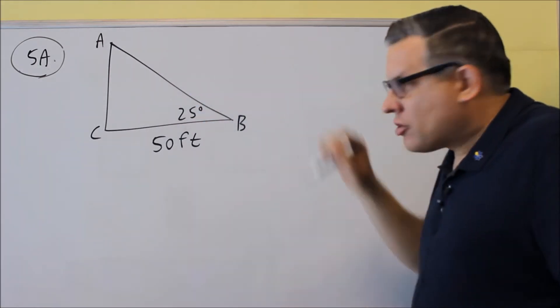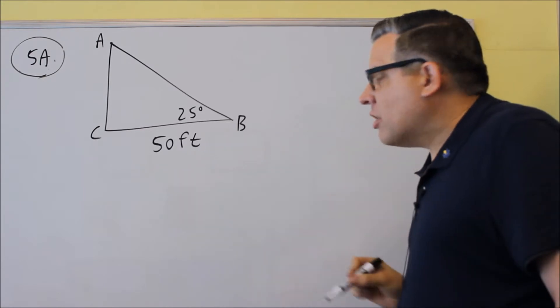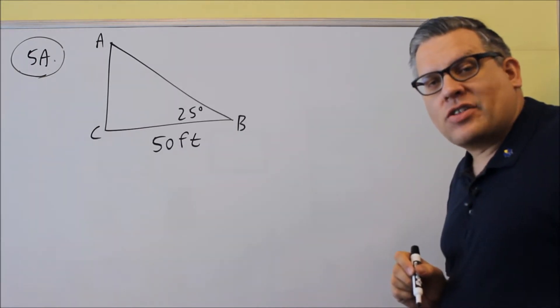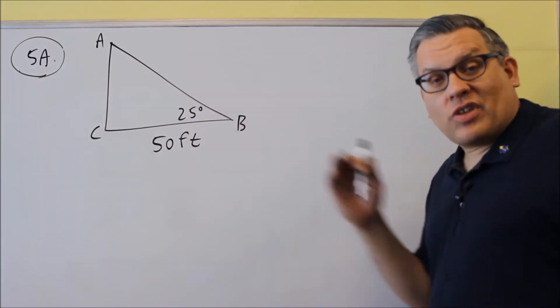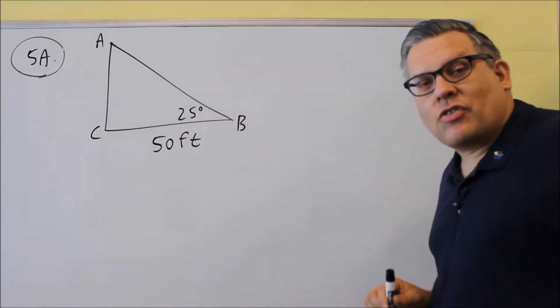Now you're given an angle here, 25 degrees, and 50 feet here. What you want to do is find the trig function that relates the side you're trying to find, which is side AC, with the side that is given, and that's going to be the 50 feet here.